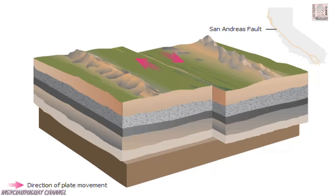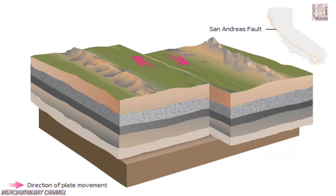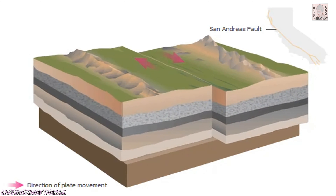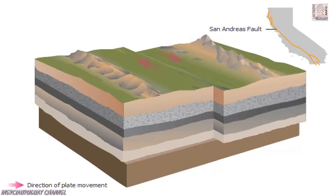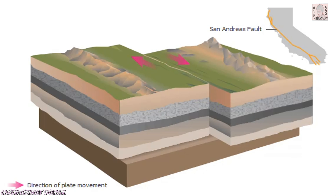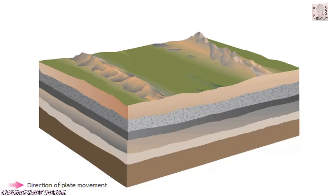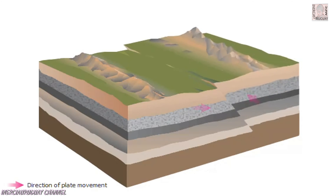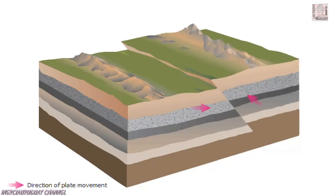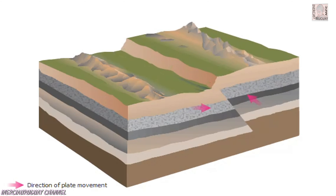When the plates move past each other, the relative motion is horizontal and we have a strike-slip fault. The San Andreas Fault, for example, is a strike-slip fault. When the plates press toward each other, large blocks of rock may be lifted up.